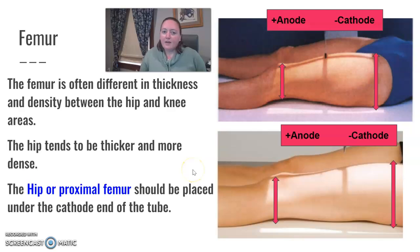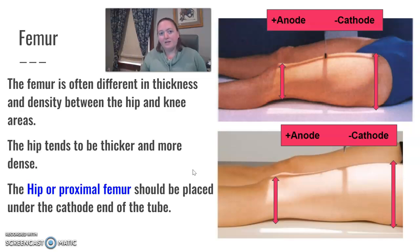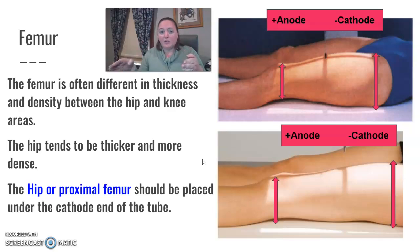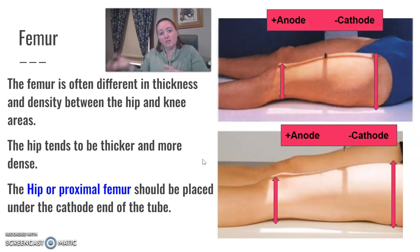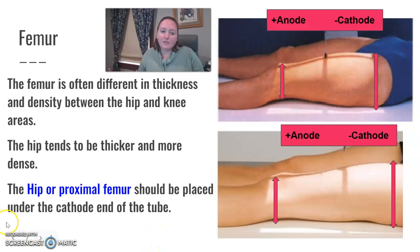The concept is straightforward: the thicker part or the fat goes under the cathode. The anode heel effect means the cathode side of your beam has more intensity, so why not use that to your advantage? Put the thicker part of the patient under the cathode end. I hope that was helpful.